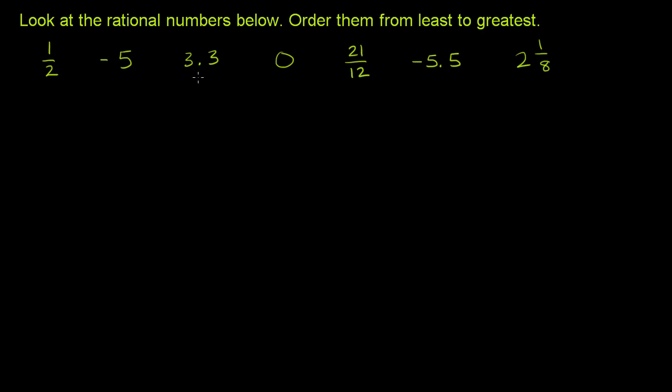Well, anyway, they tell us 1 half, negative 5, 3.3, 0, 21 over 12, negative 5.5, and 2 and 1 eighths.